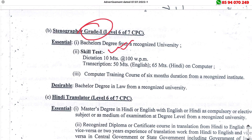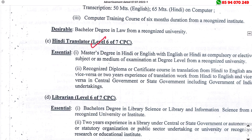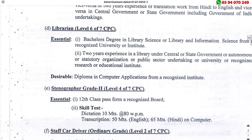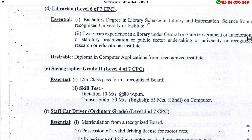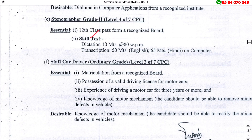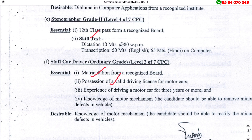The skill test has 100 ways of inventing work. You need a computer training course of 6 months. You can get a Master's degree in Indian translation, or a Bachelor's degree in Library Science or Library and Information Science. Stenographer Grade 2 requires a skill test. Staff driver in ordinary grade requires a 10th class pass plus a valid driving license, driving experience, and motor mechanics skill test.